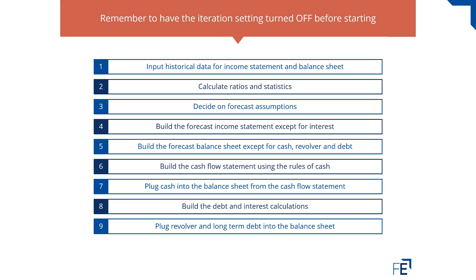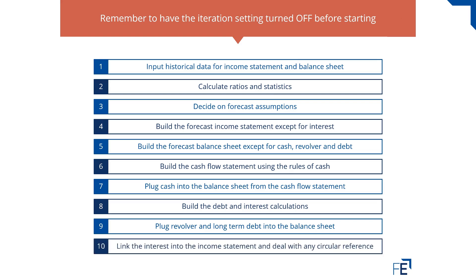You might be thinking: if I plug all of these figures in, other figures are going to change — and that's absolutely correct. Your balance sheet is basically finished, but that will then change the cash flow statement, which will then change the cash number in the balance sheet, and the balance sheet should perfectly balance. The only item now missing is interest, and we need to link interest into the income statement and deal with any circular reference that may arise.